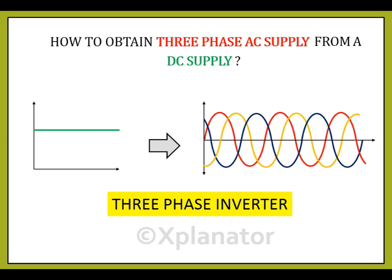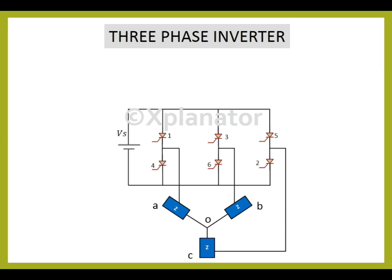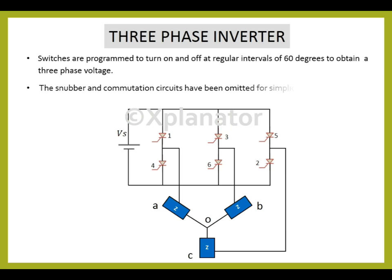To churn out a three-phase AC output from a DC input, we need a DC supply, six thyristors to work as switches, and a star connected load with four terminals A, B, C and O. The switches are programmed to turn on and off at regular intervals of 60 degrees to obtain a three-phase voltage. The snubber and commutation circuits have been omitted for simplicity.